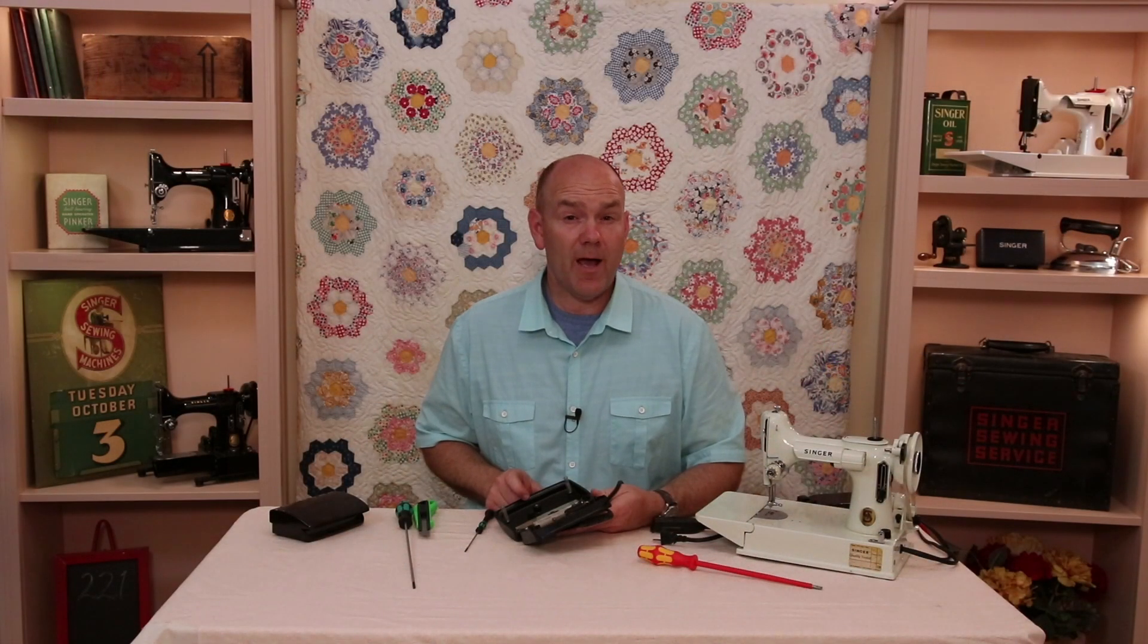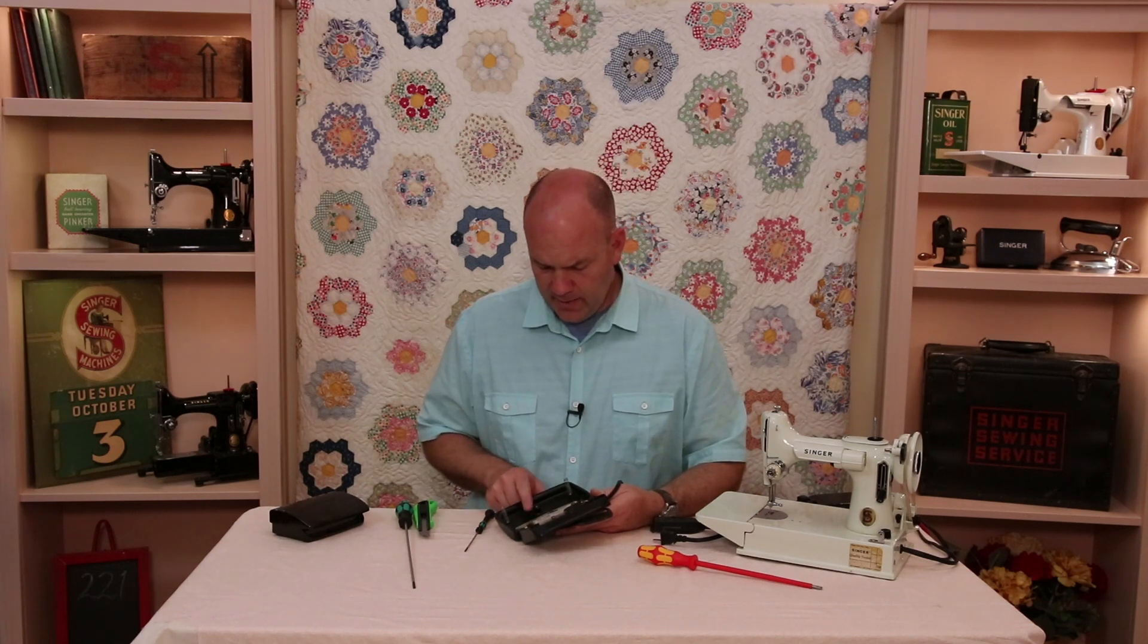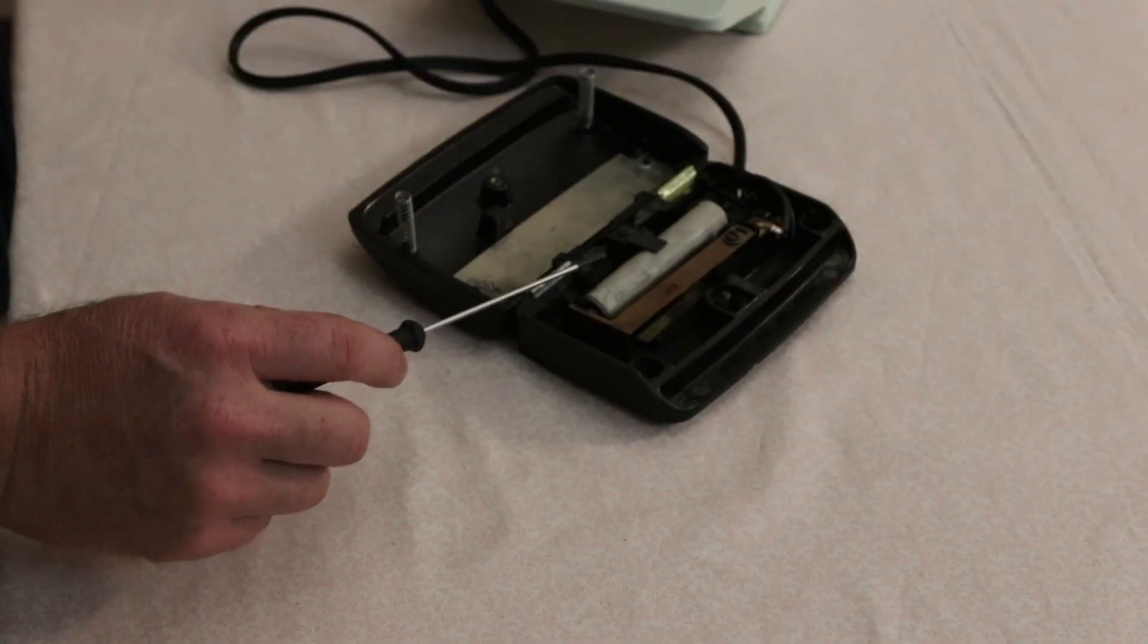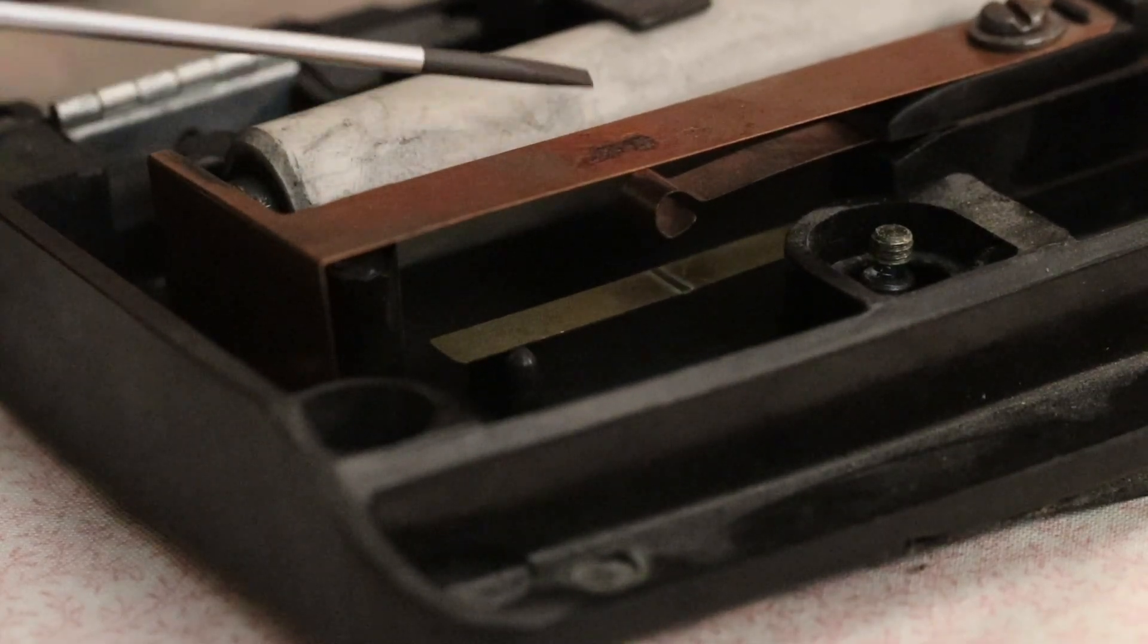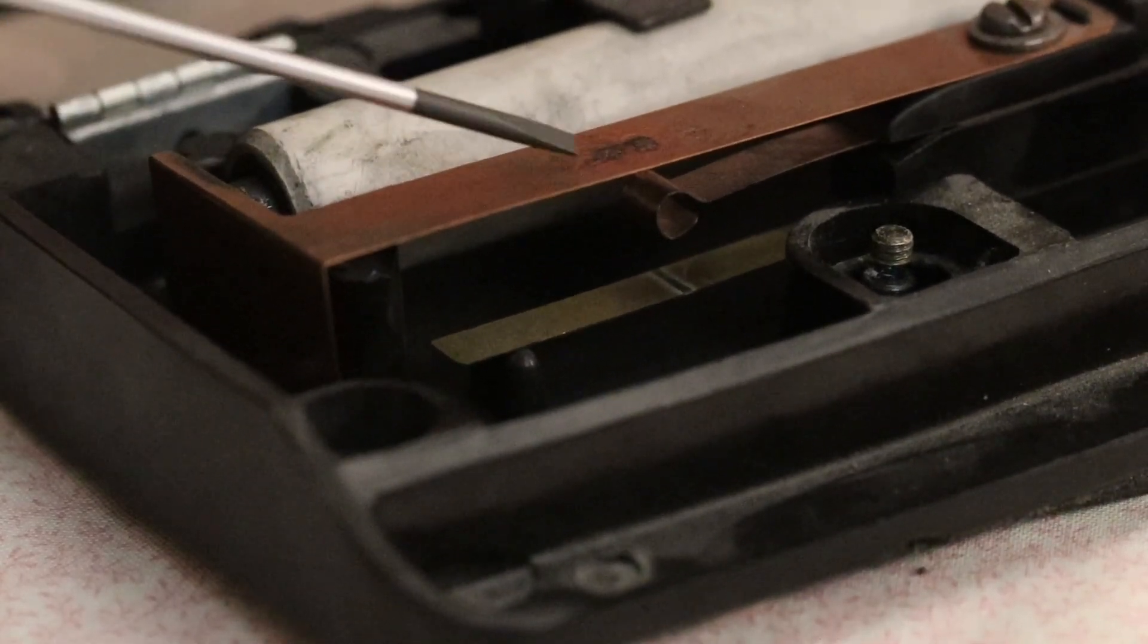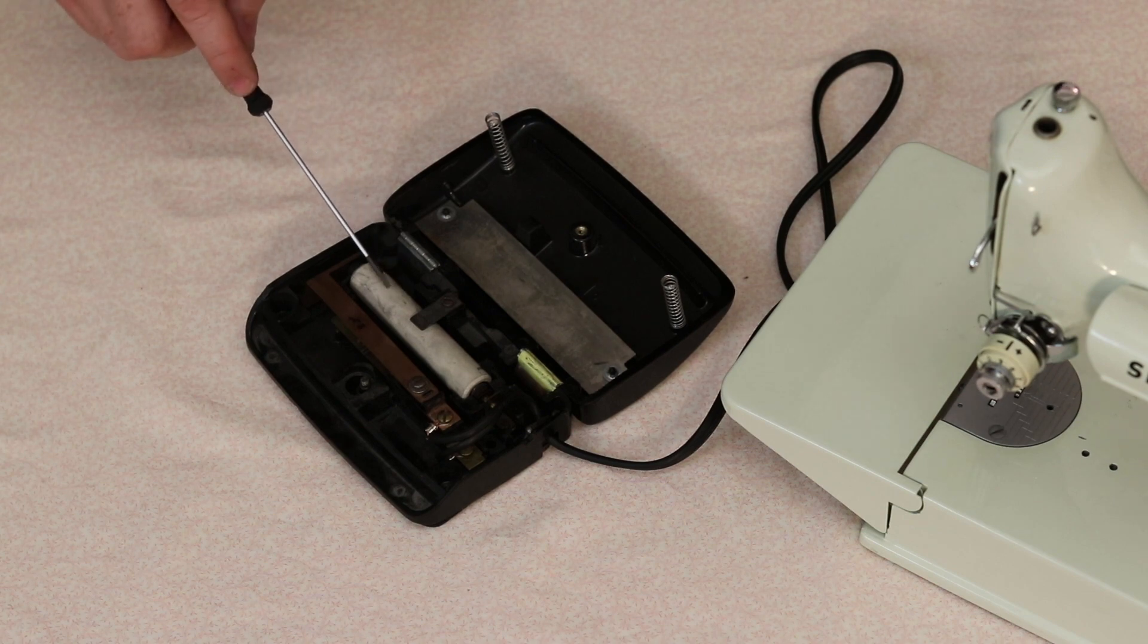So first I'm going to show you how this controller works and that'll tell us why it's out of adjustment. There's a little kind of button right here and when this controller is closed that button presses down on this copper tab. And this copper tab draws the end in where all the carbon discs are because this has carbon discs in it just like the other common featherweight one, the Bakelite foot controller.